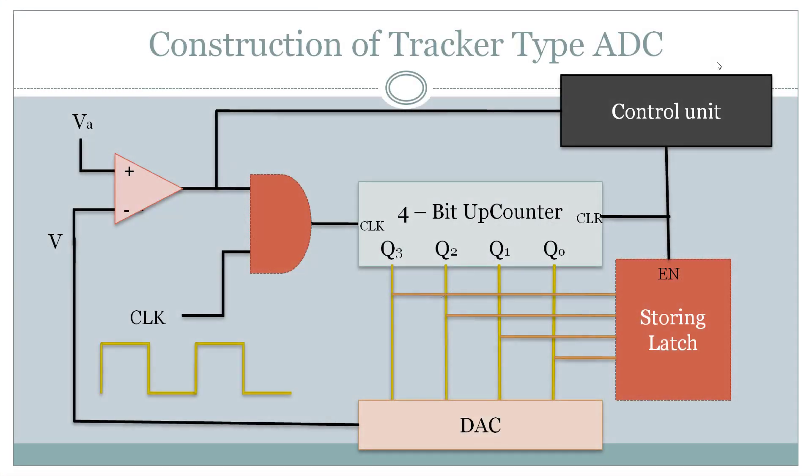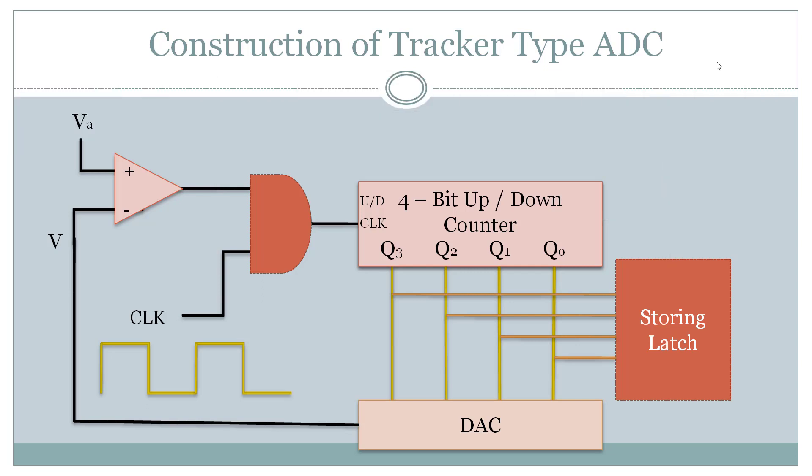This up and down counting can be achieved by an up-down counter instead of a normal counter. So we changed the normal counter to the up-down counter. With this change, the need of clear command and storing at a specific time is long gone. Hence, the control unit is kicked out of the tracker type ADC.